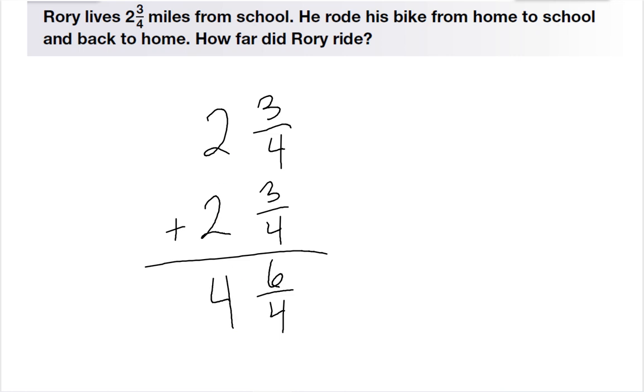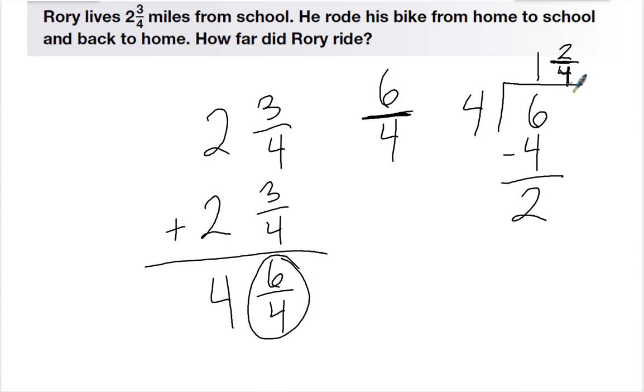Again, I don't like the improper fraction. So 6 fourths. Remember this line means divide. So I can take 6 and divide it by 4. 4 goes into 6 one time. 4 times 1 is 4. Subtract. And I have a remainder. But we can turn that remainder into a fraction. So it would be 1 and 2 fourths, which we know is the same as 1 and 1 half.